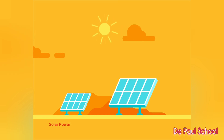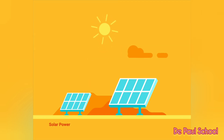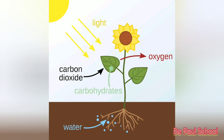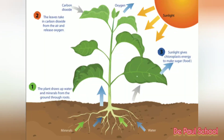With the help of solar energy, the green plants use this solar energy to make their food. They use it to convert into sugar and starch, and this process of conversion is known as photosynthesis. Photosynthesis is the process in which green plants prepare their own food.